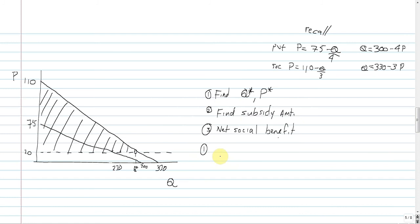Just like we did in the first part, we're just going to plug the $20 into the social return function, which is going to give us a Q star of 270 units.